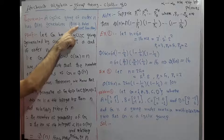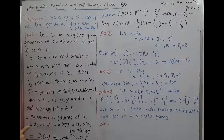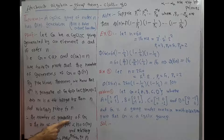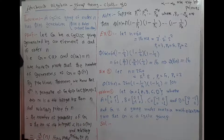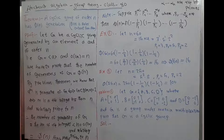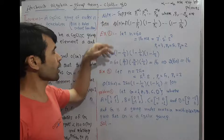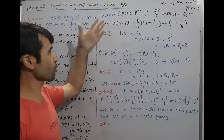We have proved that a cyclic group of order n has φ(n) generators, where φ(n) is the Euler totient function. The number of generators of G is equal to φ(n). Now, related to the Euler totient function, suppose n = p1^α1 · p2^α2 · … · pk^αk.